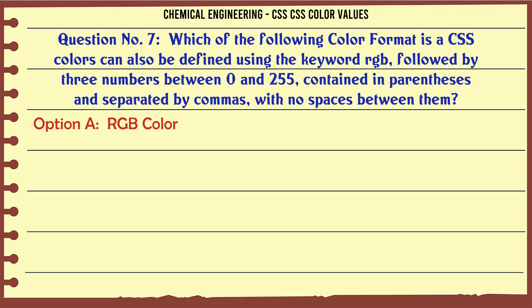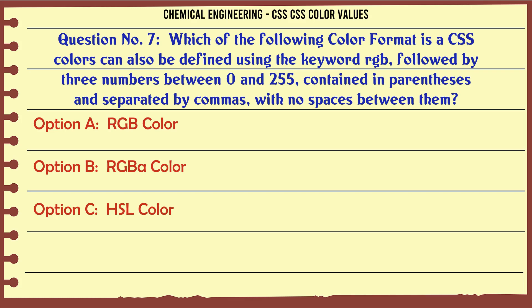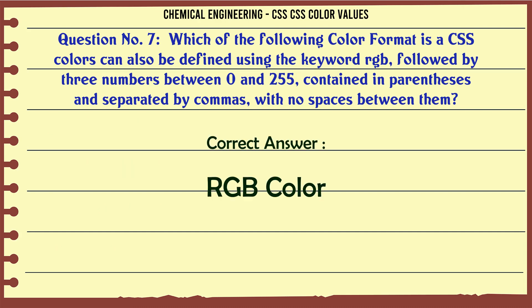Which of the following color formats is a CSS color that can also be defined using the keyword RGB followed by three numbers between 0 and 255 contained in parentheses and separated by commas with no spaces between them? A: RGB color. B: RGBA color. C: HSL color. D: HSLA color. The correct answer is: RGB color.